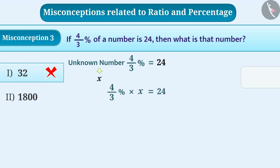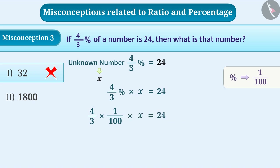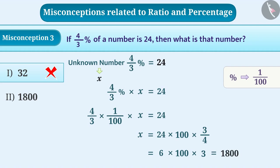Since percent means 1/100, we can write: (4/3) × (1/100) × X = 24. This gives X = 24 × 100 × (3/4) = 6 × 100 × 3 = 1800. In this way, the value of the unknown number is 1800, and option 2 is the right answer.